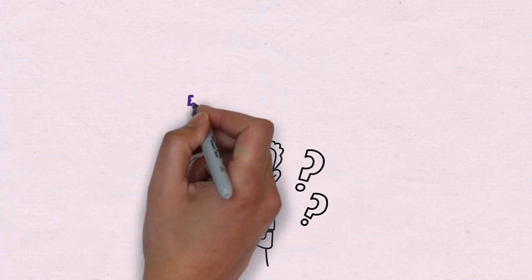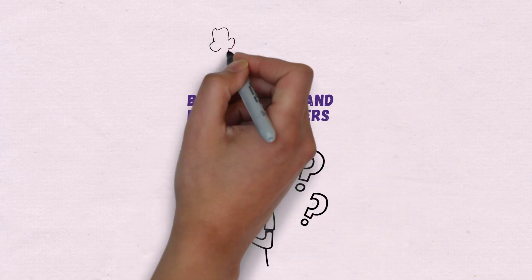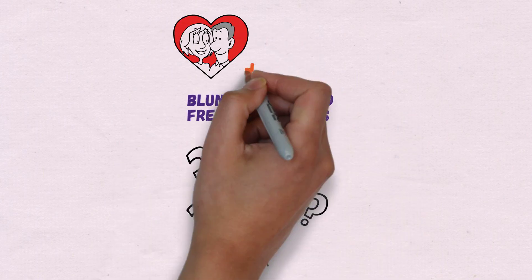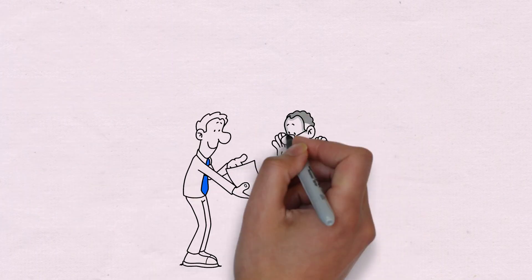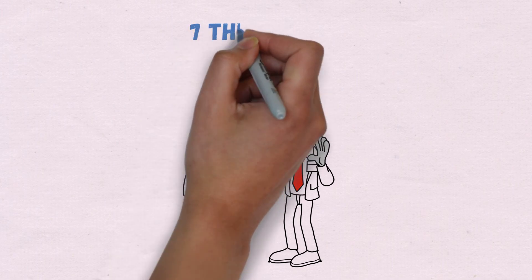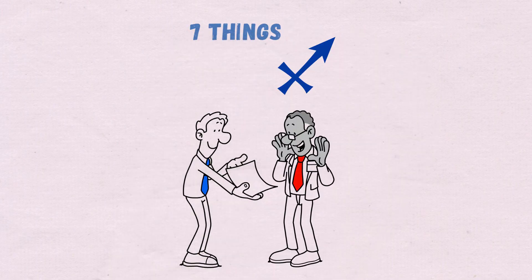Sagittarians are often chastised for being blunt, direct, and freedom-seekers in a relationship. But that's just a half-truth. You must know the other half to understand and appreciate them. Here are the 7 things that only a Sagittarian will know.